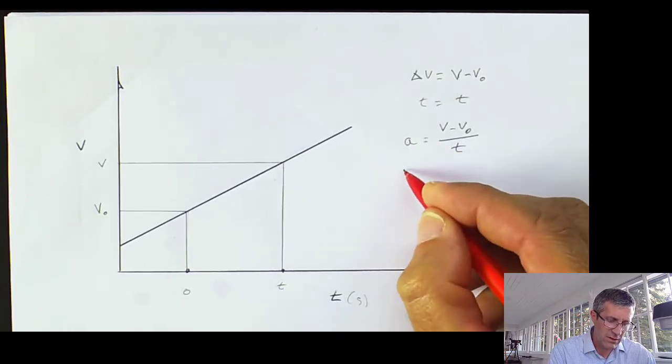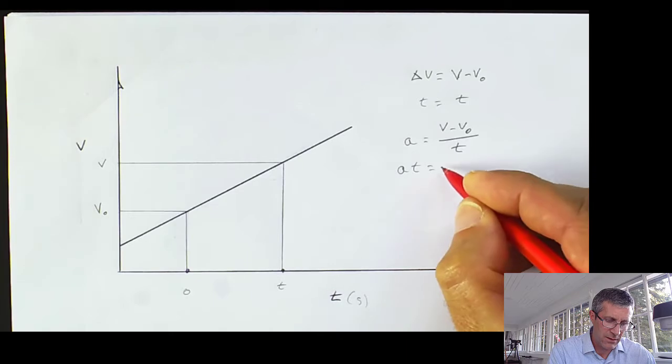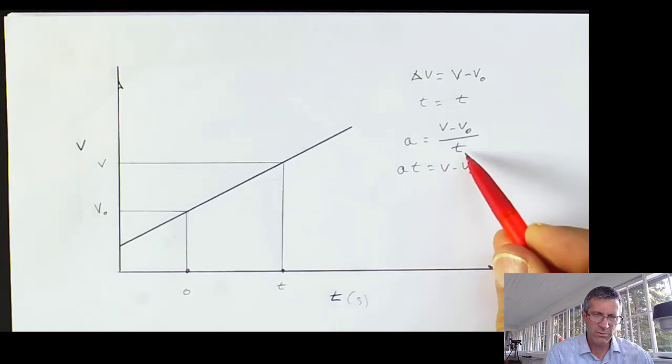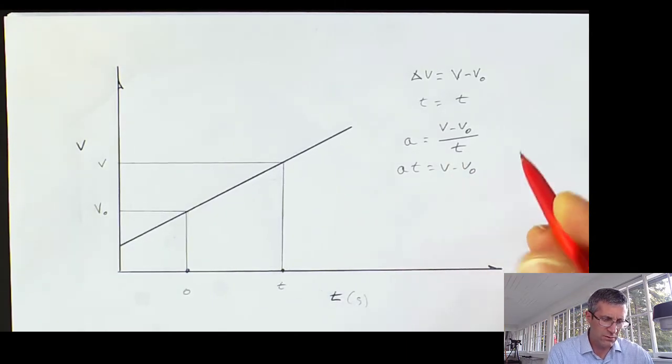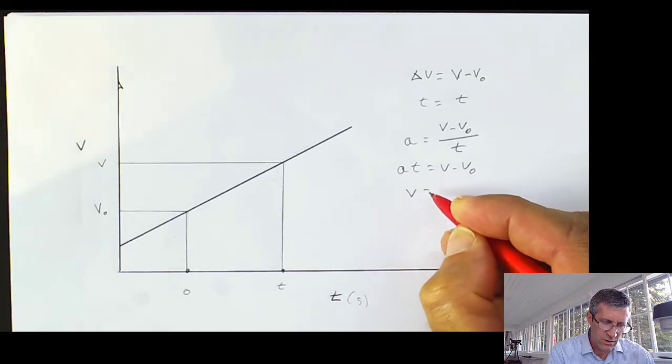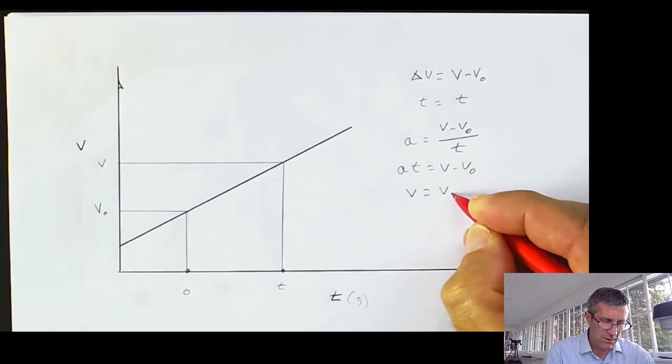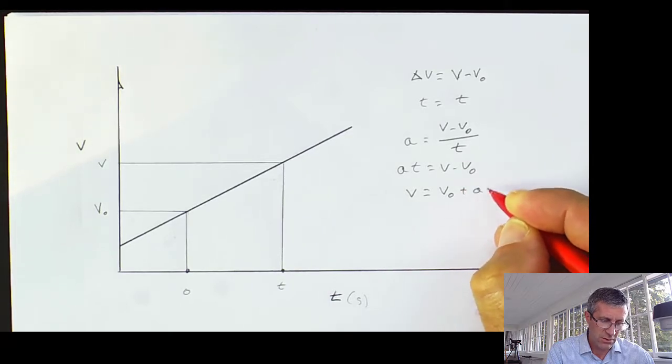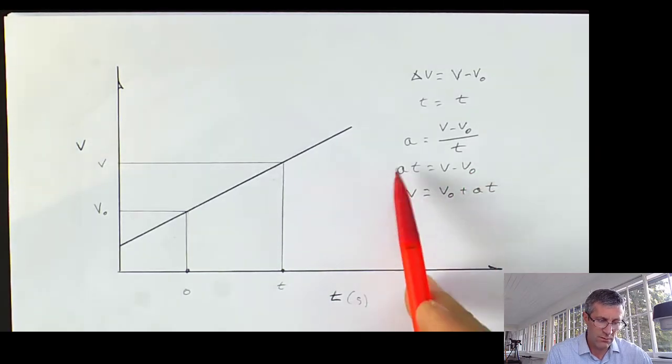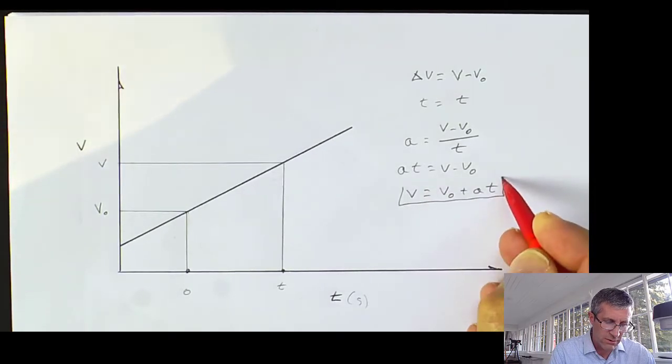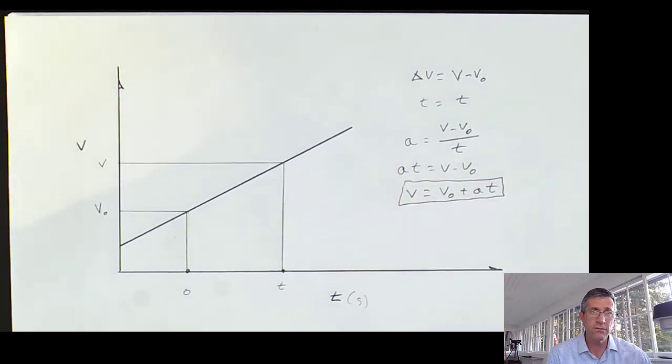Now I'm going to do simple algebra to isolate velocity by itself, my final velocity by itself. So I'm going to end up having acceleration times time. I multiply time by both sides and move V₀ and switch things around. So I'll get my final velocity, just V, is going to be V₀ plus acceleration times time. This is equation number one.